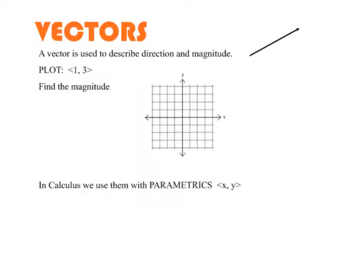A couple of things that we want to talk about in this video and it's going to lead us to some AP questions. A vector is something used to describe direction and magnitude as you can see.